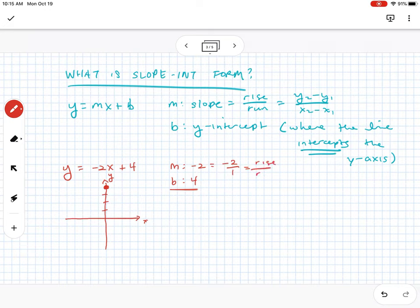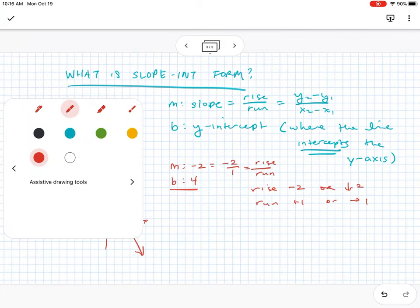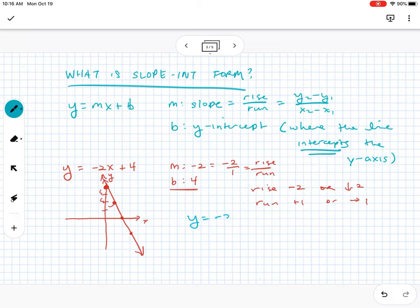This slope can be rewritten as negative 2 over 1, which is rise over run. This means we rise negative 2 or we go down 2 and then we run positive 1 or we go to the right 1. So I go down 2, I go over 1, down 2, over 1, down 2, over 1. And there is the graph of my line. I use the y-intercept as my starting point and my slope to know where to plot the next point.